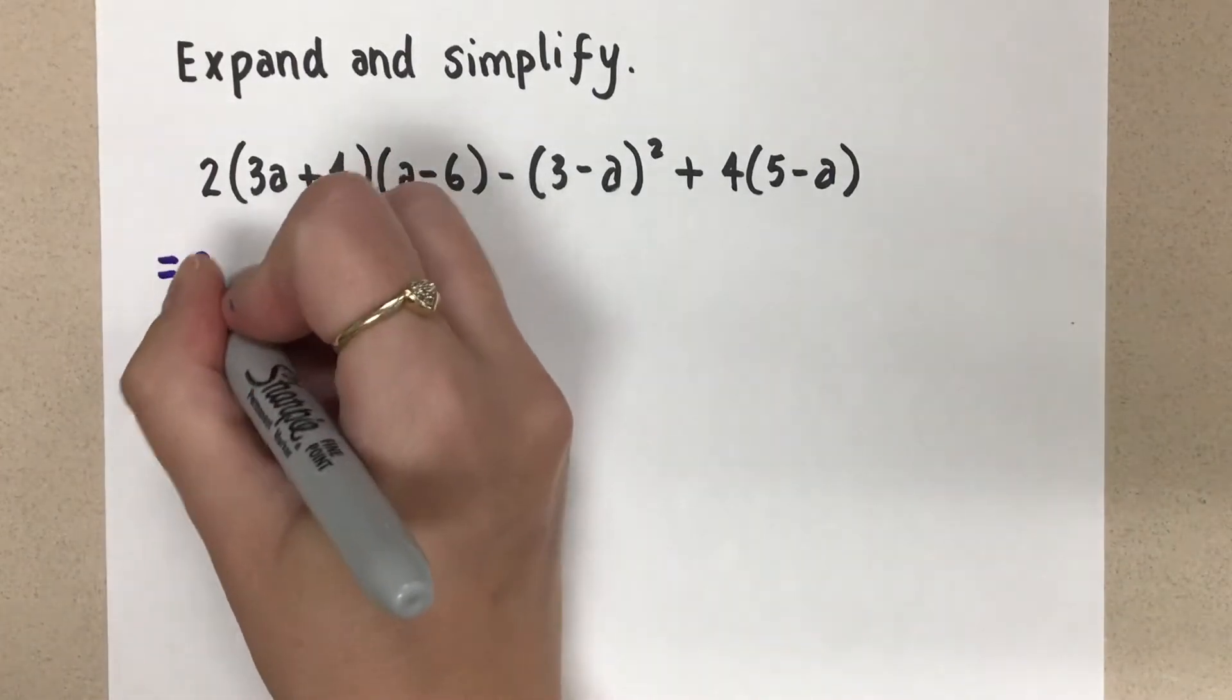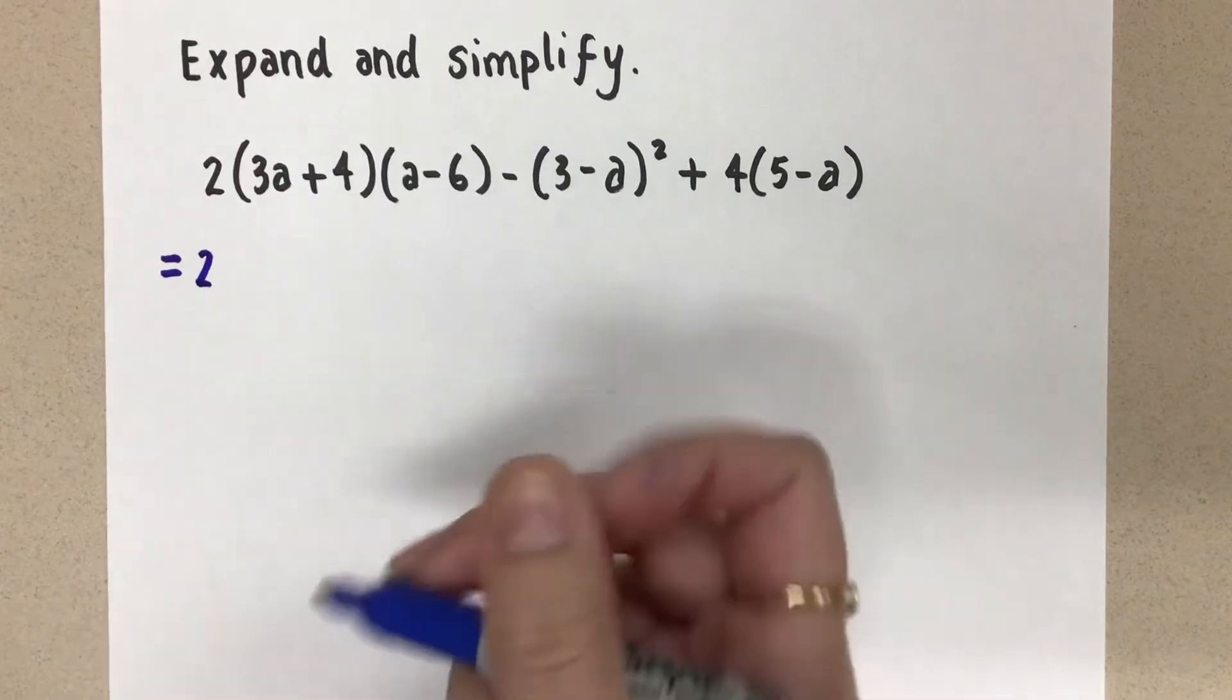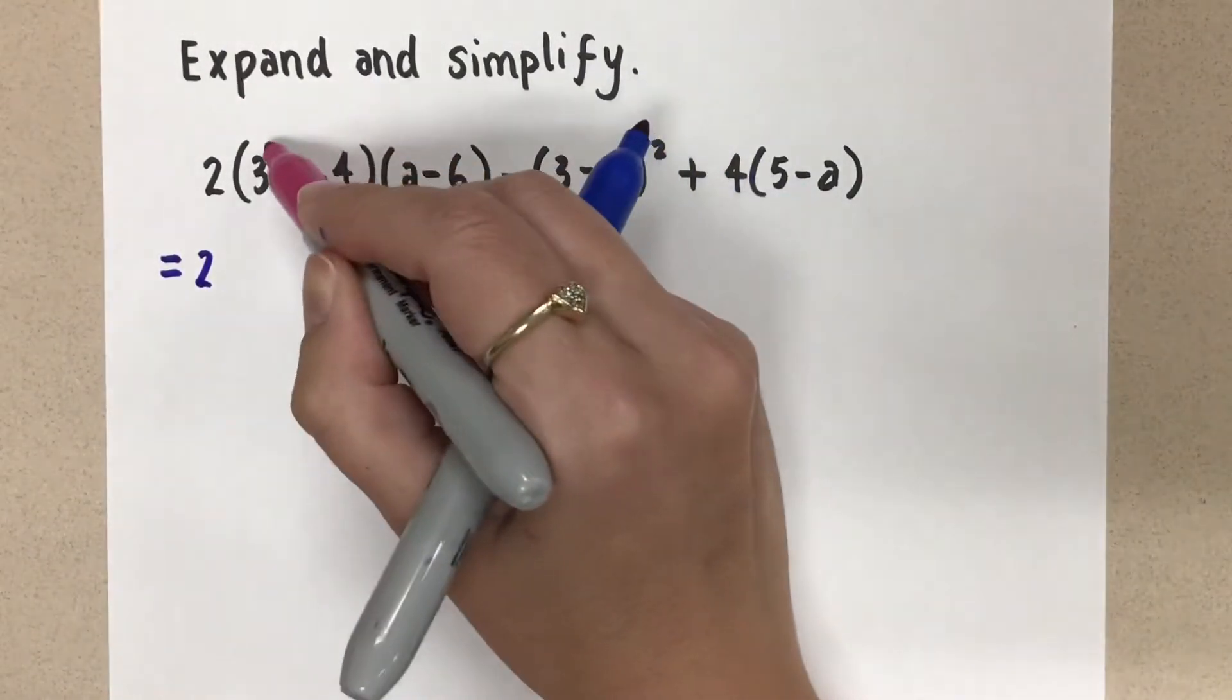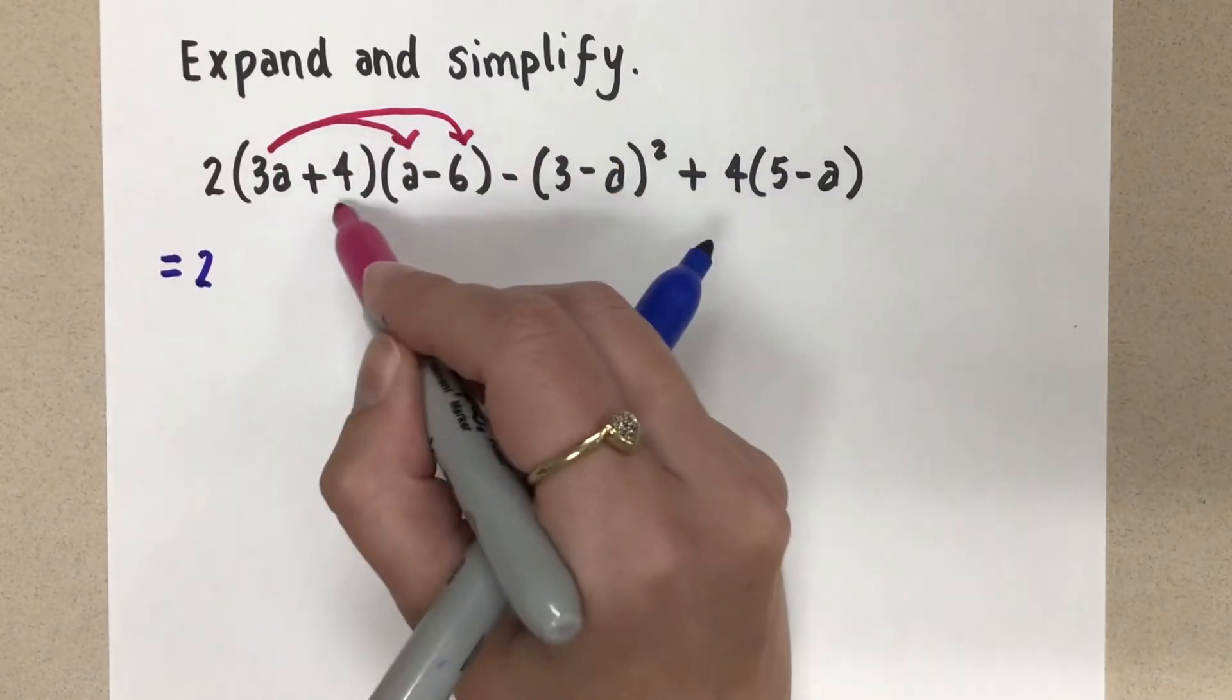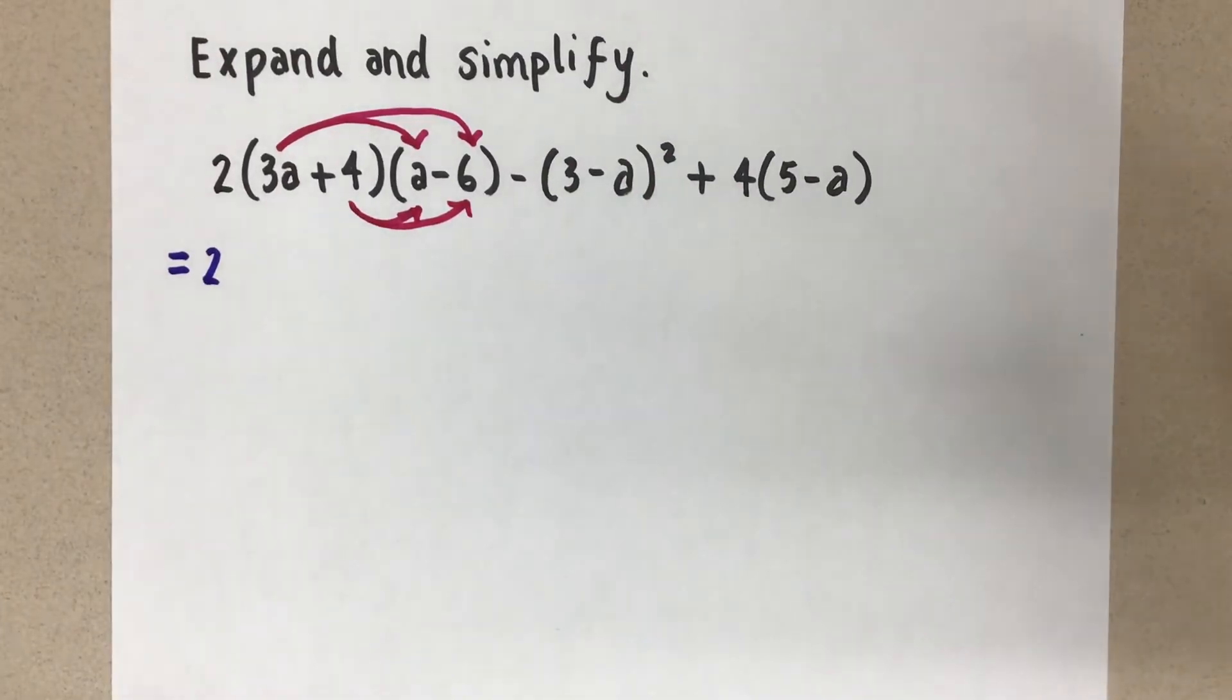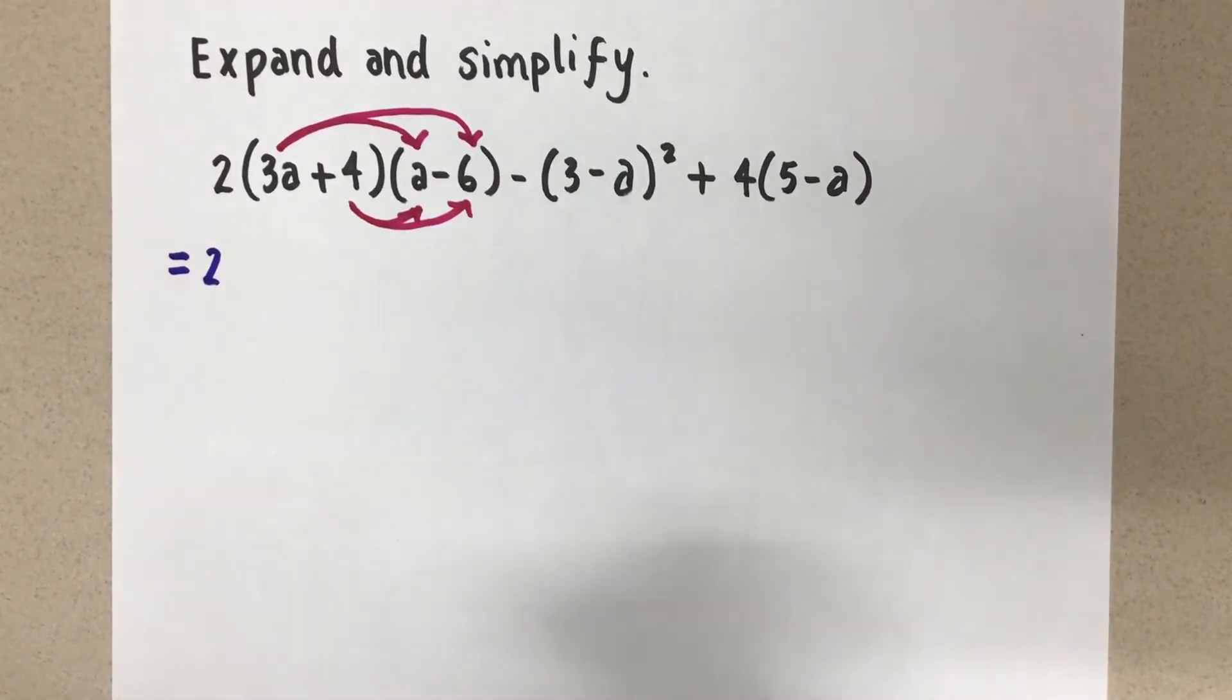Alright. So I'm going to keep the two on the outside, like I said, and I'm going to go ahead and distribute here. So remember when we have a binomial times a binomial, we want to do each term in one set of brackets times each term in the other set of brackets. We've done this before, this distributing. So just be careful when you do it. Make sure that you're multiplying everything with everything like you're supposed to.